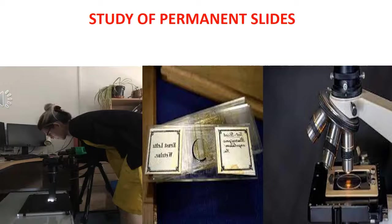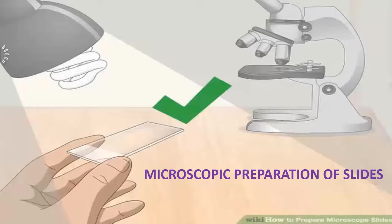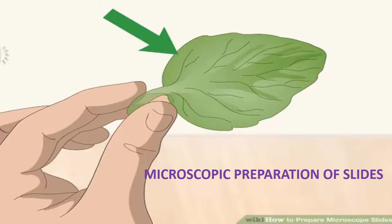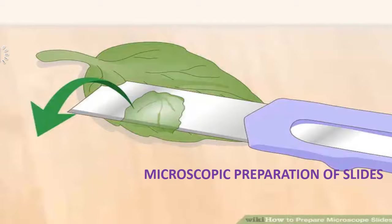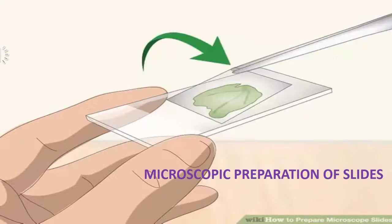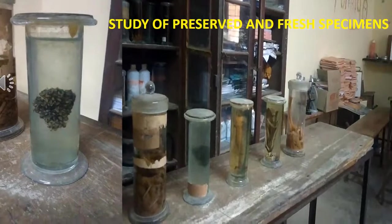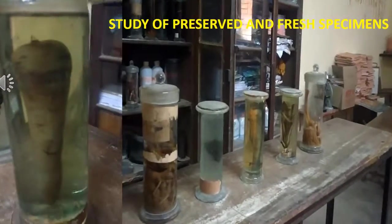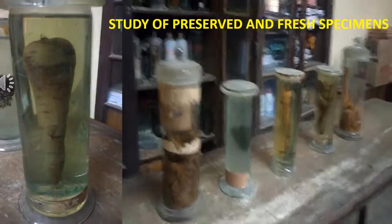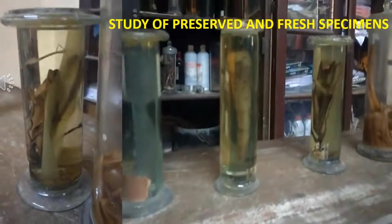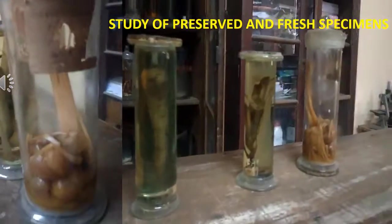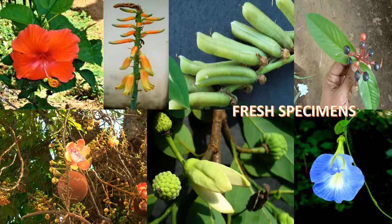These pictures show how permanent slides are prepared and examined under the microscope. This video explains how temporary slides are prepared. In this video you can find the preserved specimens kept in formalin preservative, examined through direct observation in the field.